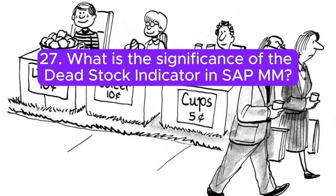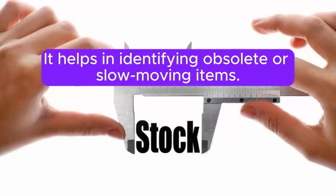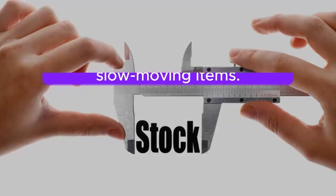Question 27: What is the significance of the dead stock indicator in SAP MM? Answer: The dead stock indicator is used to identify materials with no consumption or movement over a specified period. It helps in identifying obsolete or slow-moving items.